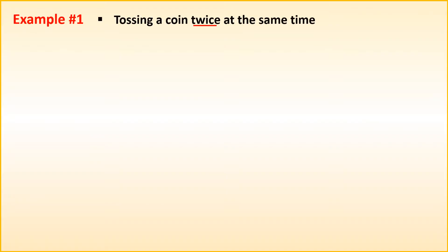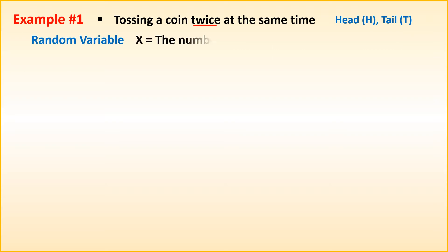Example: tossing a coin twice at the same time. Let us consider the faces of the coin — head and tail. H for head and T for tail. Our random variable here is X, the number of tails.